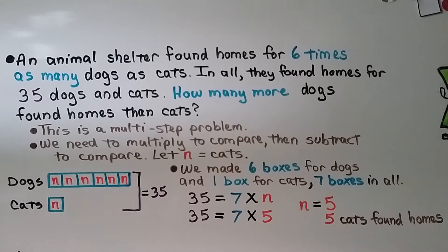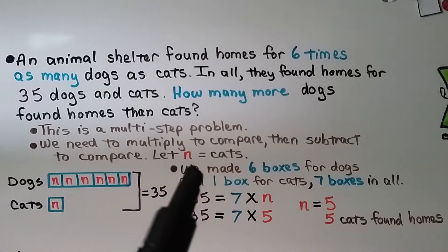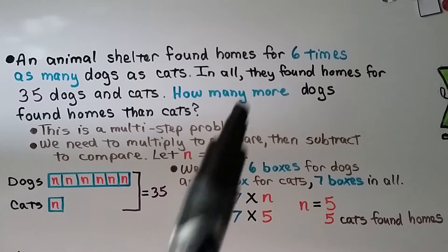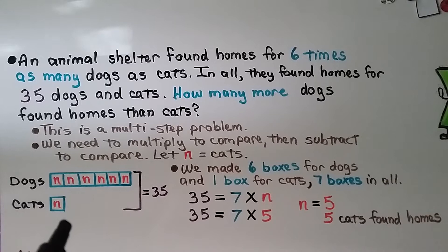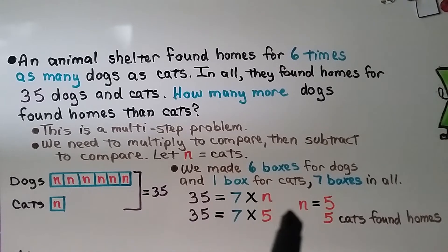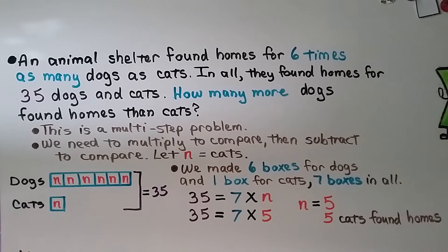An animal shelter found homes for six times as many dogs as cats. In all, they found homes for 35 dogs and cats. How many more dogs found homes than cats? This is a multi-step problem — we multiply to compare, then subtract to compare. We let n equal cats. We make six boxes for dogs and one box for cats — seven boxes in all equaling 35. So 35 equals seven times n, and since seven times five is 35, n equals 5. Five cats found homes.